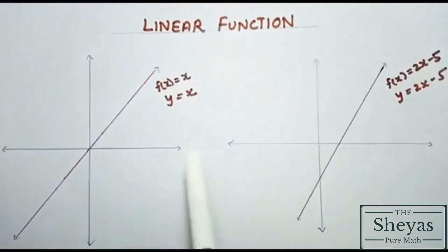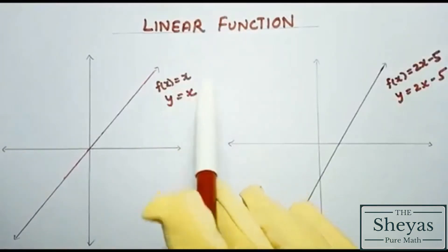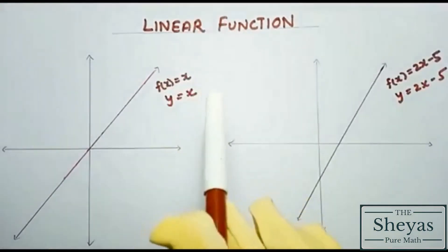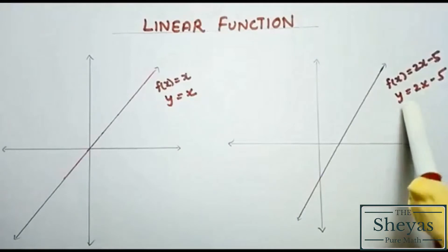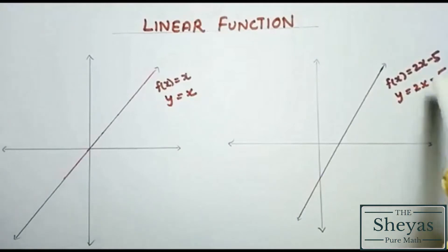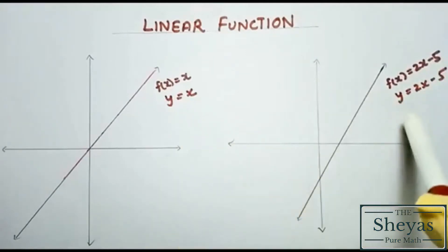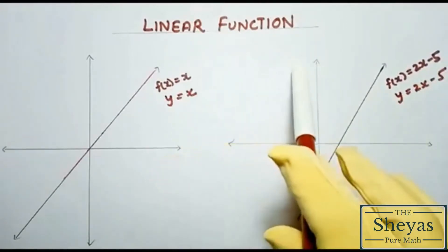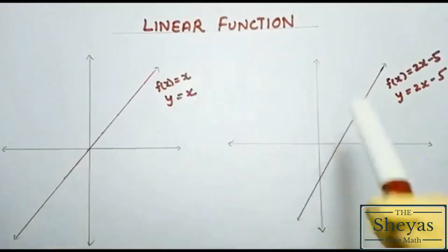The highest power of x here is 1, and here also the highest power of x is 1. So we call these linear functions. These are the example graphs of a linear function.